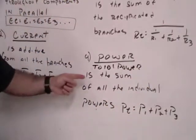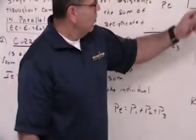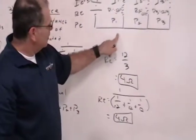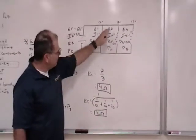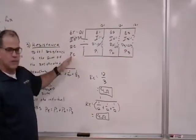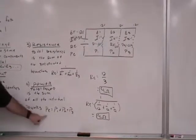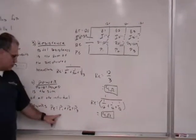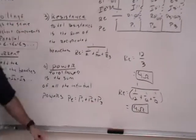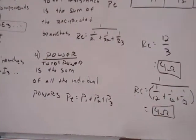Total power is the sum of all the individual powers. So once I calculate the power for P1, the power for P2, the power for P3, just add them up and that will give you your total power. And here's your equation. Pt is equal to P1 plus P2 plus P3.